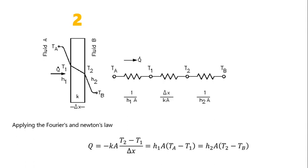Applying Fourier's Law to the wall with thickness ΔX, area A, and thermal conductivity K, we get Q = −KA(T2 − T1)/ΔX. The heat transfer through fluid A is Q = H1·A·(Ta − T1), where H1 is the heat transfer coefficient on side 1, A is the cross-sectional area, Ta is the fluid temperature, and T1 is the surface temperature.